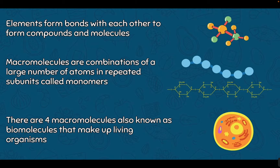These elements aren't going to just stay as separate atoms — they're going to form bonds with each other and form compounds and molecules like H2O. We take the elements hydrogen and oxygen and bring them together to make bigger compounds and molecules, giving us new properties. When we have a macromolecule — macro meaning large — it's a combination of a large number of atoms arranged in repeated subunits called monomers. These are macromolecules, still made up of certain elements, but put into larger subunits that combine to make very large molecules.